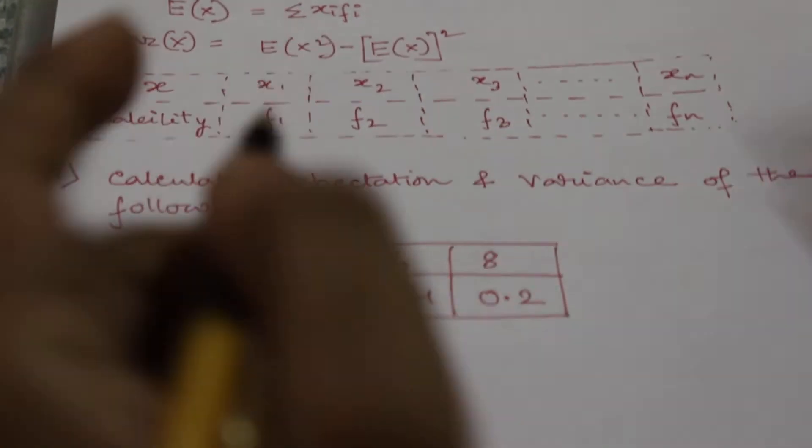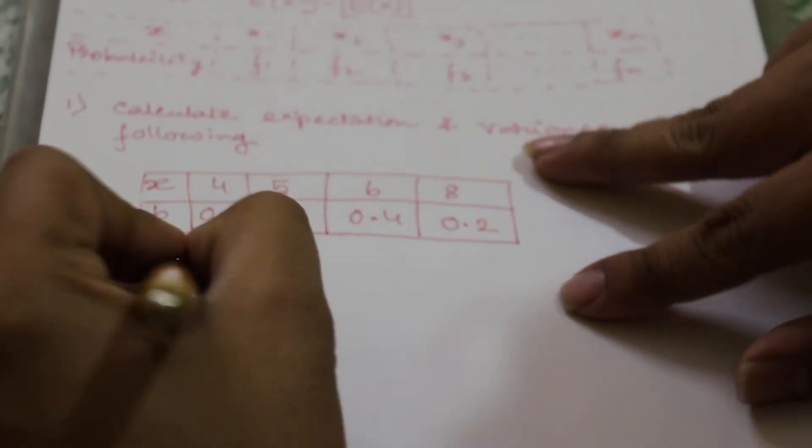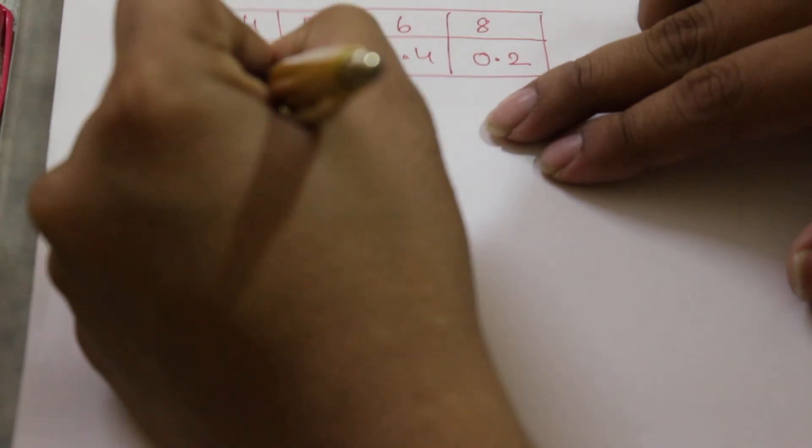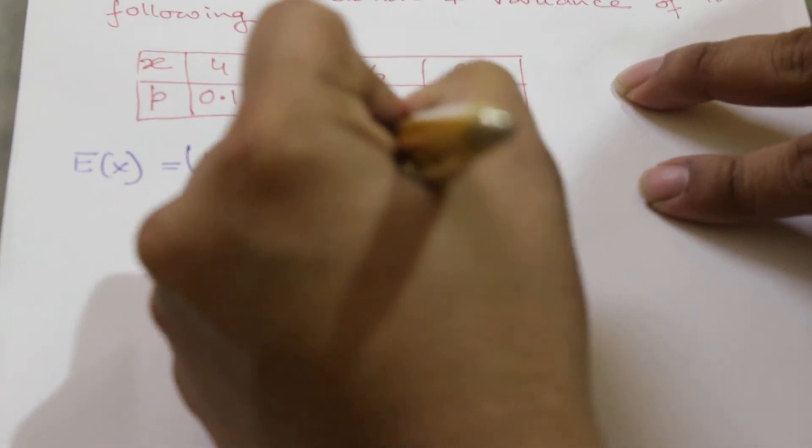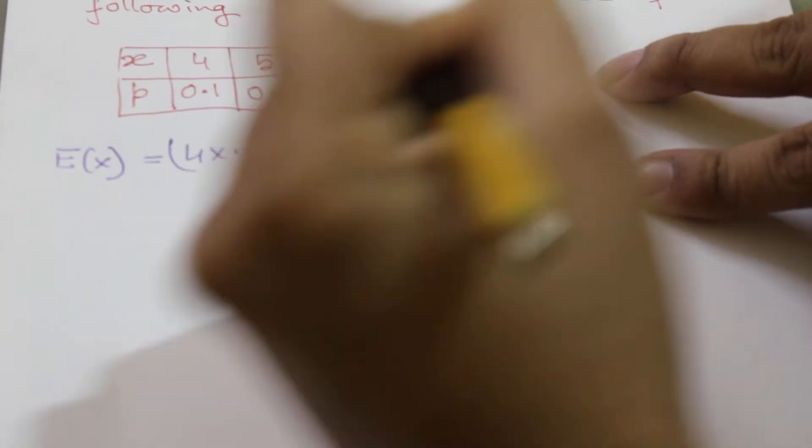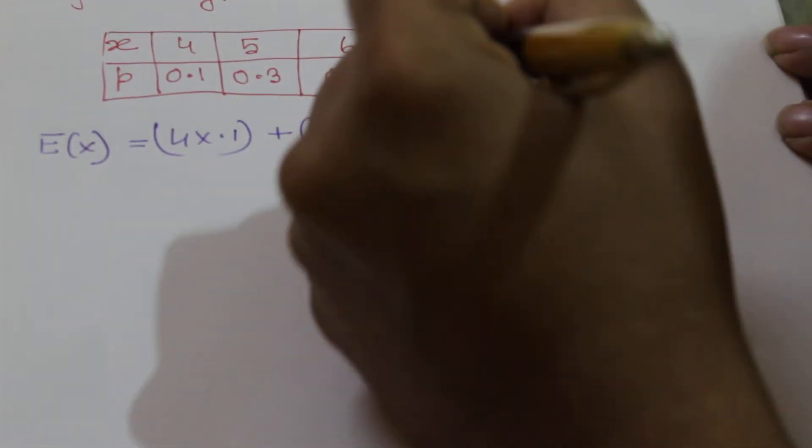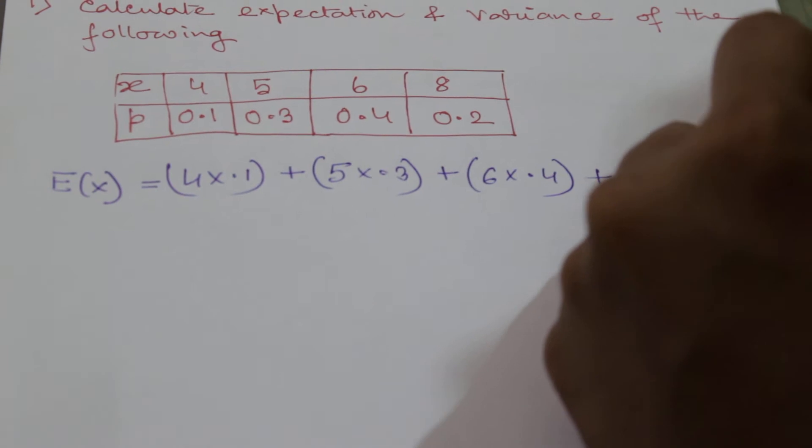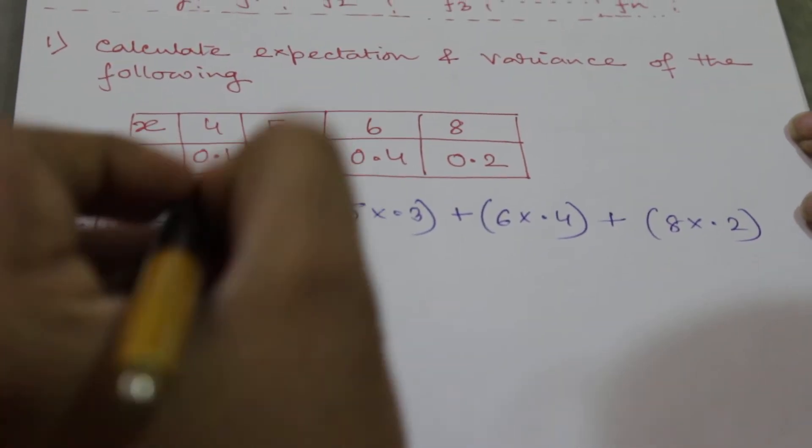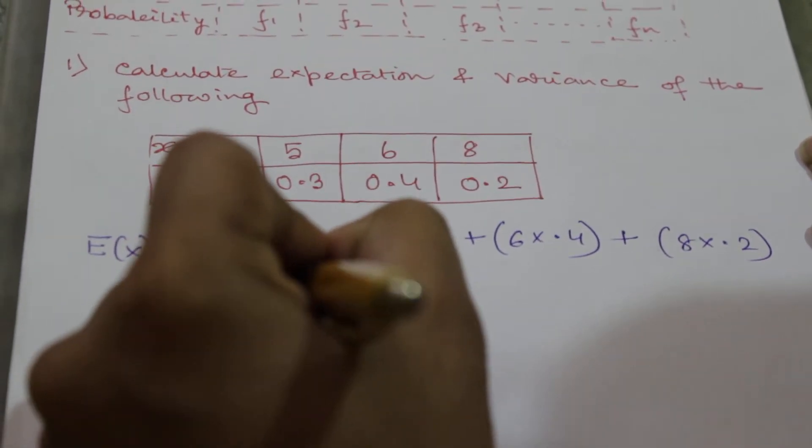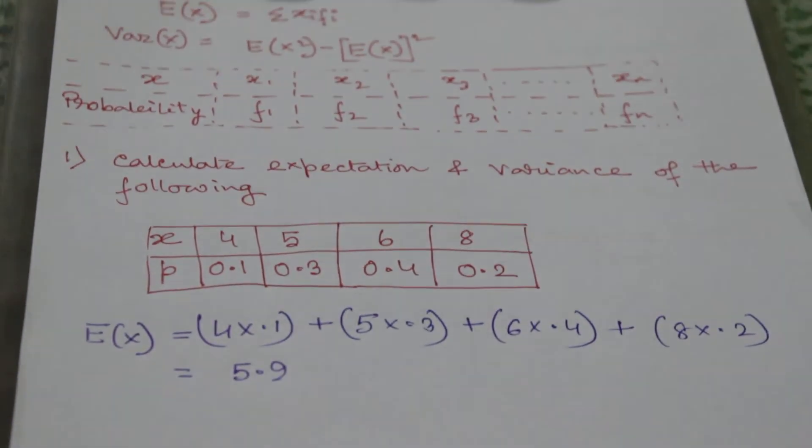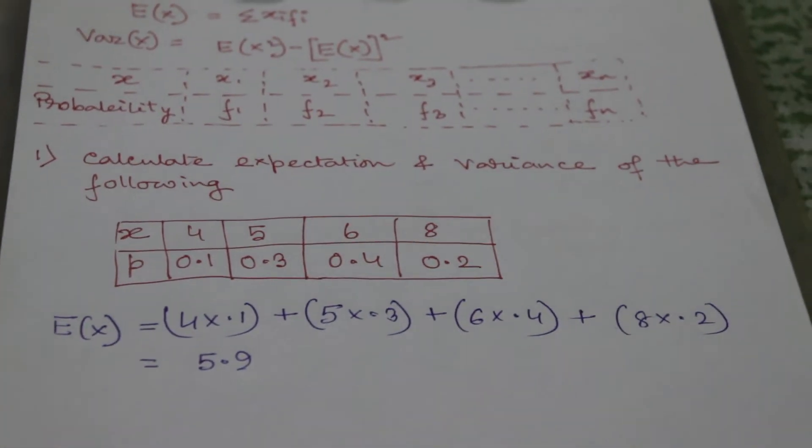So expectation is summation of xi fi, so 4 into 0.1 plus 5 into 0.3 plus 6 into 0.4 plus 8 into 0.2. Sum of it will be 5.9, so we have got the mean or expectation. Now we have to calculate E(X^2).